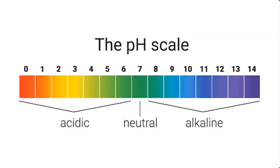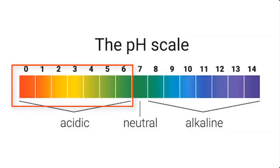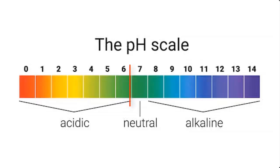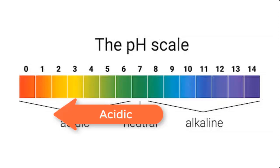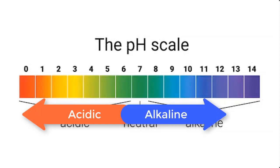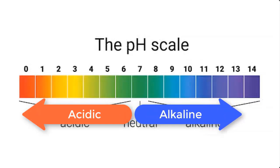An example of a neutral solution is water. pH is expressed on a number scale ranging from 0 to 14. 0 to 6 is the acidic part of the scale, and 8 to 14 is the alkaline part of the scale, while 7 stands for neutral. Acidity increases from 6 to 0, meaning 0 is more acidic than 1, and 1 is more acidic than 2 — so 6 is the least acidic on the scale. On the other hand, 8 is less alkaline than 9, and 9 is less alkaline than 10.